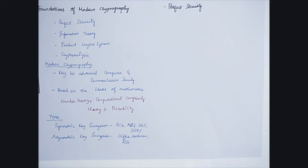The types of modern cryptography algorithms are broadly classified into two. One is symmetric key encryption — examples are RC4 algorithm, AES algorithm, DES algorithm, and Triple DES algorithm. Another type is asymmetric key encryption — examples are Diffie-Hellman key exchange and RSA algorithm.